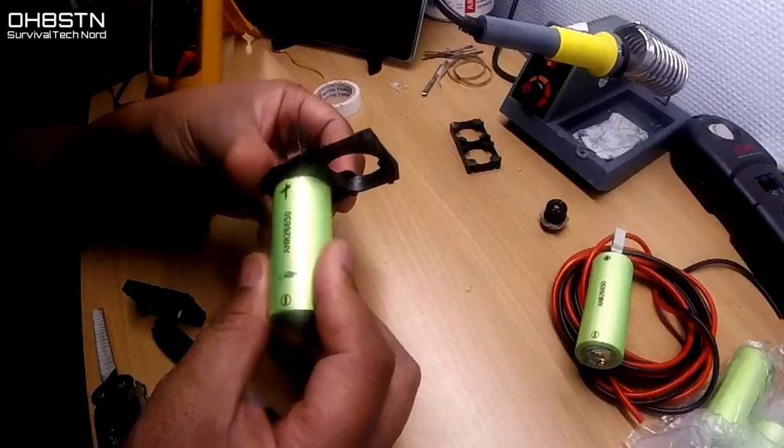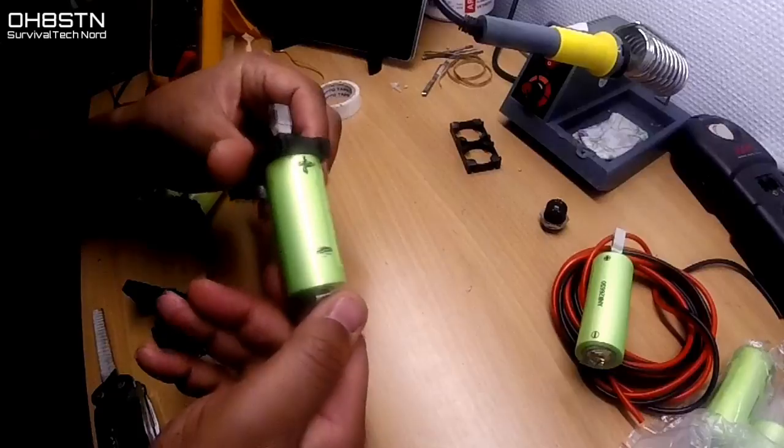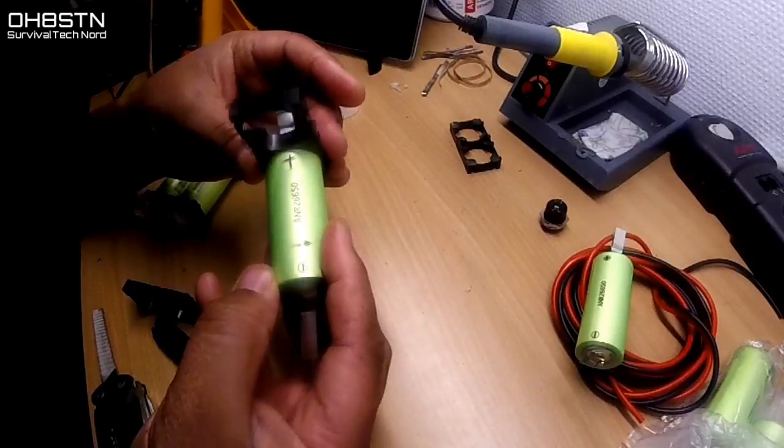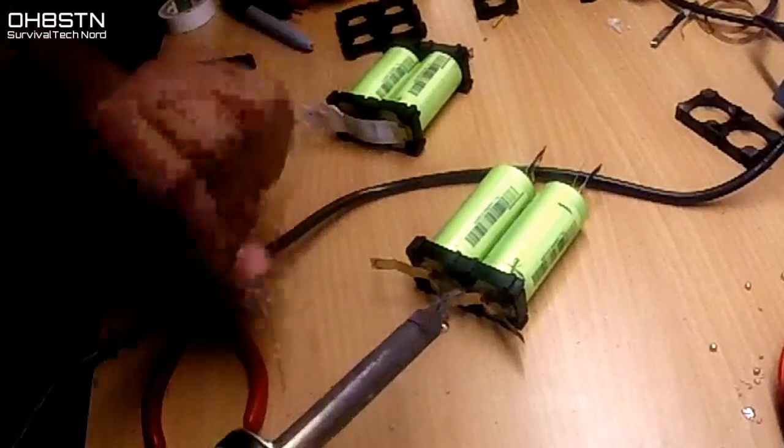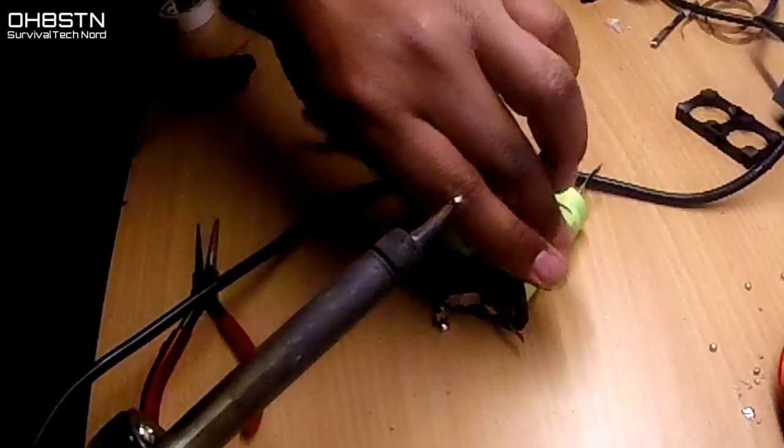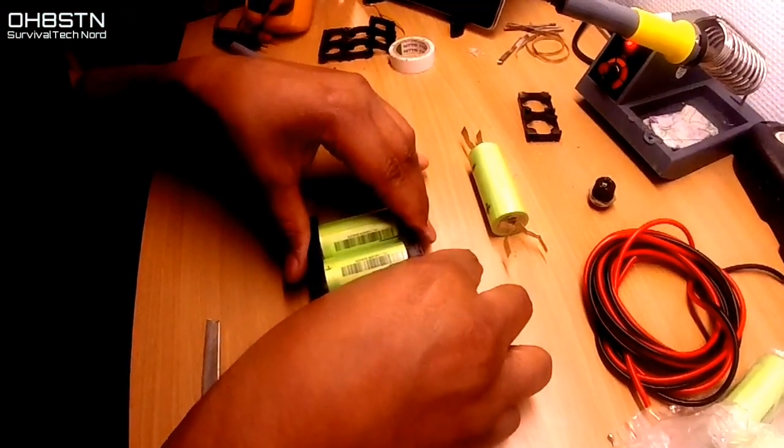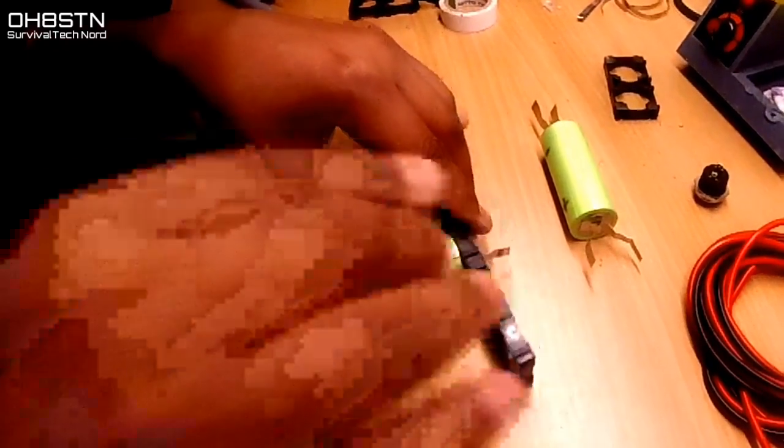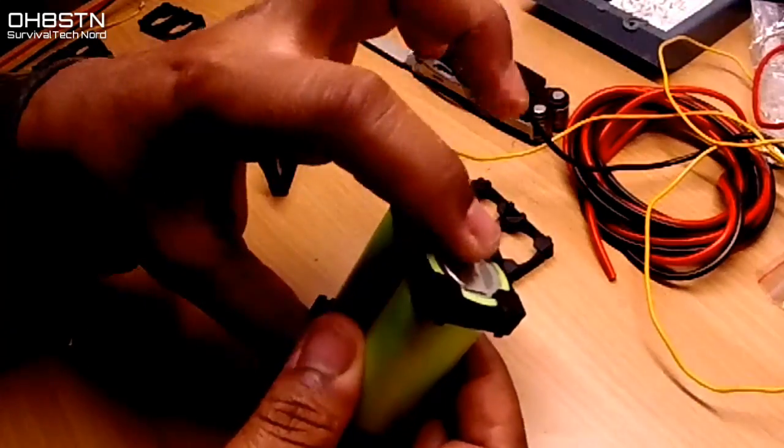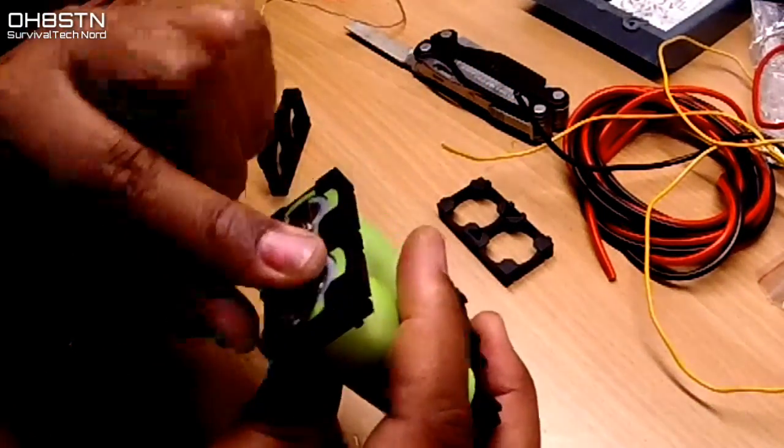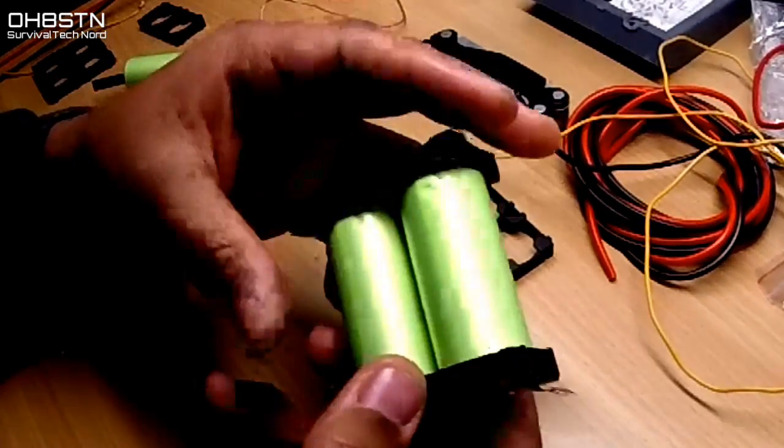After that we're going to go ahead and place two cells into the cradles, but we're going to make sure to check and then double check the polarity of each cell. Remember: plus plus and minus minus. Now we'll go ahead and solder those two tabs together using gravity to ensure the solder doesn't short out the batteries themselves. What you're left with is two parallel cells in the cradle.